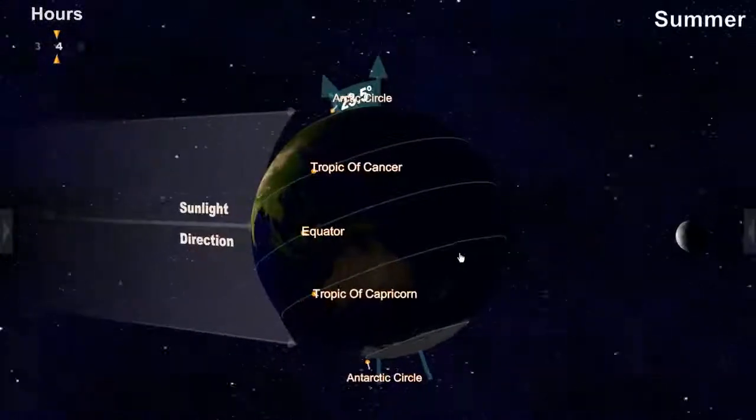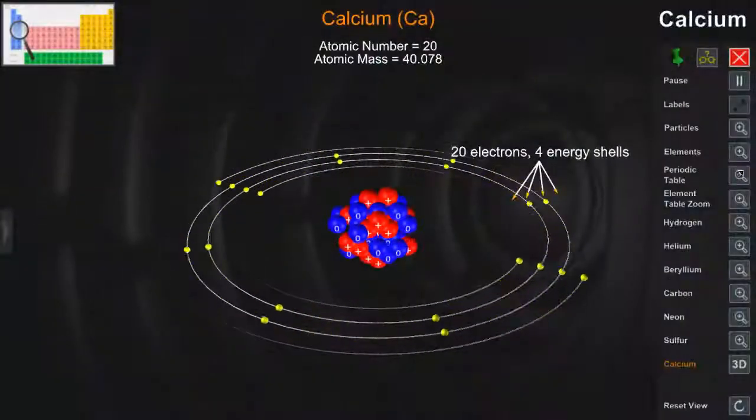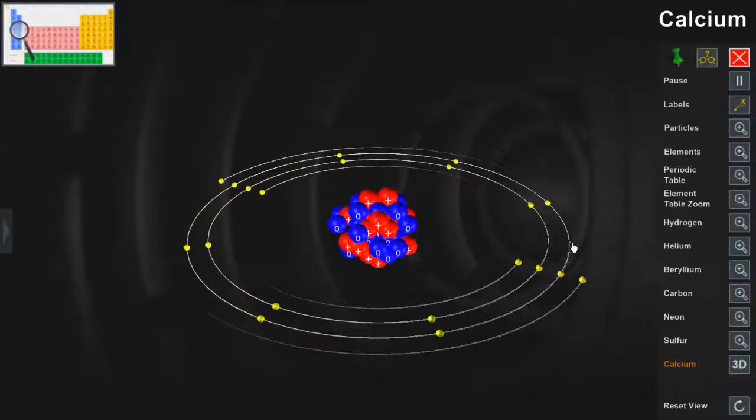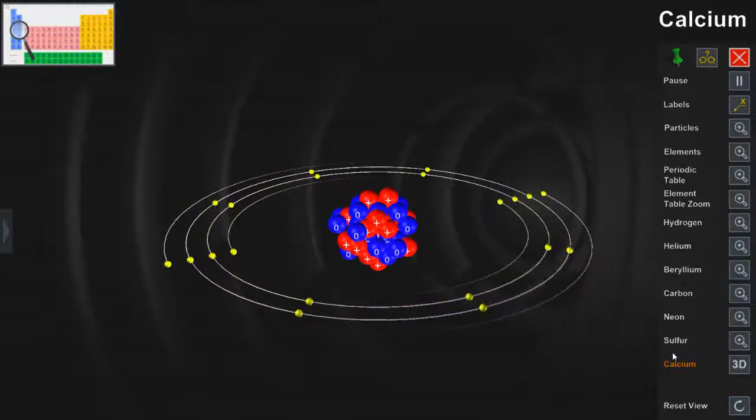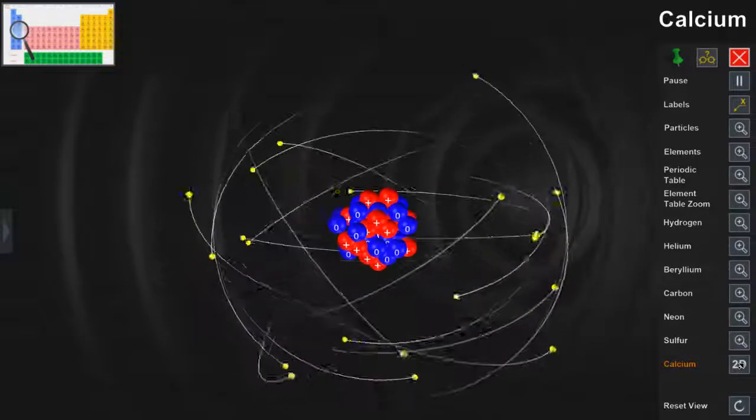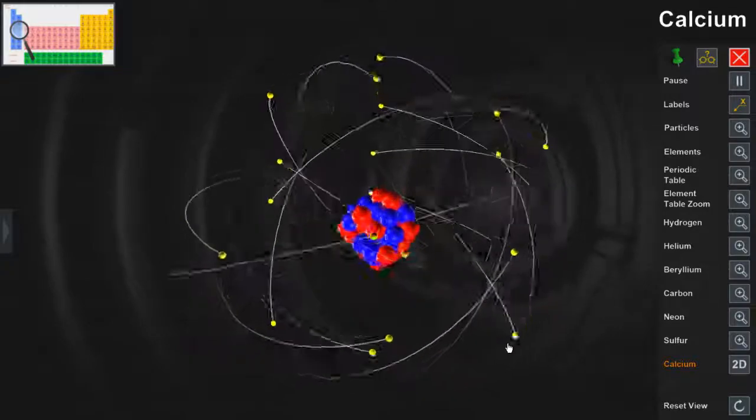We can also learn about things that are very small, as shown by this model of the Bohr atom. Being able to show the electron orbits in 3D is quite exhilarating when viewed on a stereoscopic 3D TV or projector.